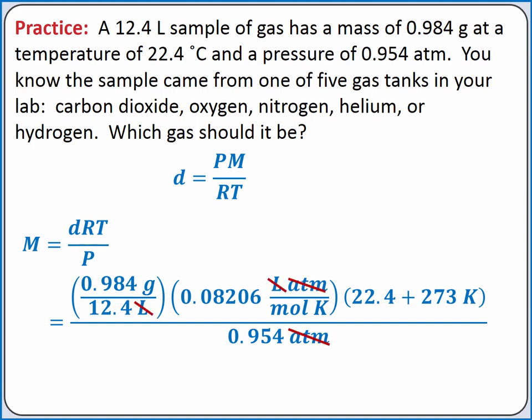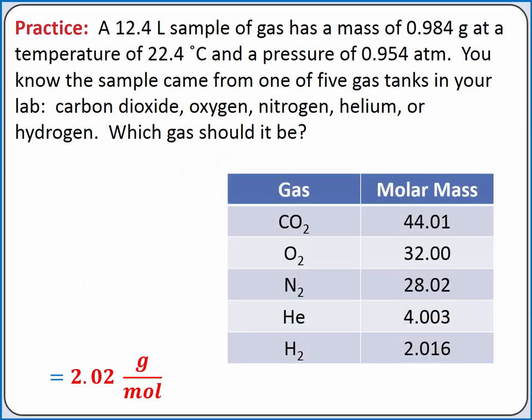Now our units of liters cancel out, atmospheres cancel out, and Kelvin cancel out. We're left with units of grams per mole. Completing the calculation, we should get 2.02 grams per mole.